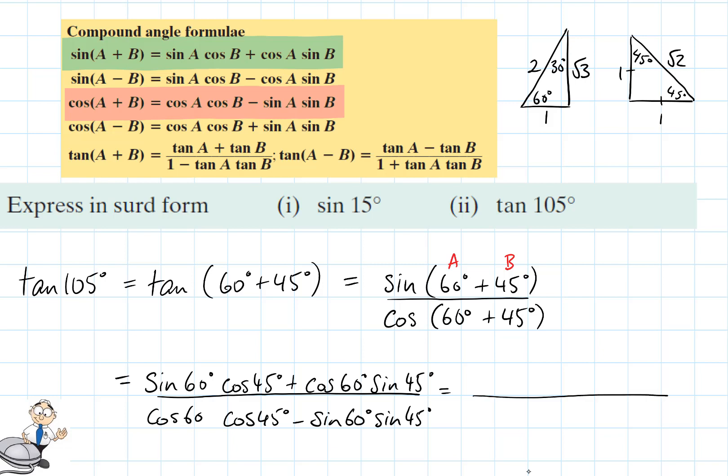Now we'll use the triangles we have here. We'll evaluate each of these individually. So sine 60 degrees is root 3 over 2, cos 45 degrees is 1 over root 2, plus cos 60 degrees that's half by sin 45 is 1 over root 2. That's been divided by cos 60 degrees which is half by cos 45 degrees which is 1 over root 2, take away sin 60 degrees which is root 3 over 2 times sin 45 which is 1 over root 2.